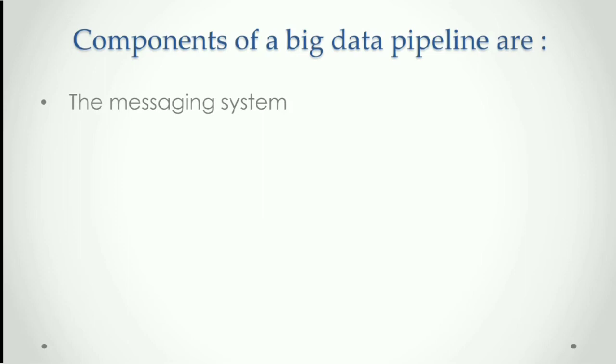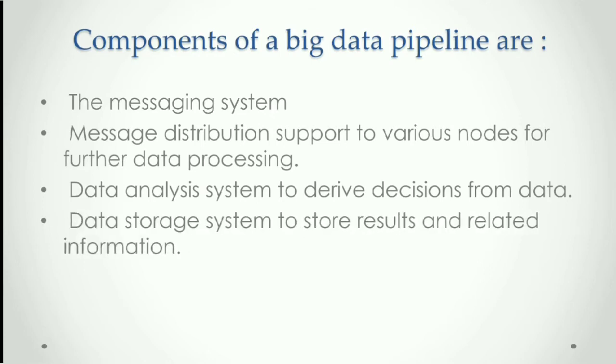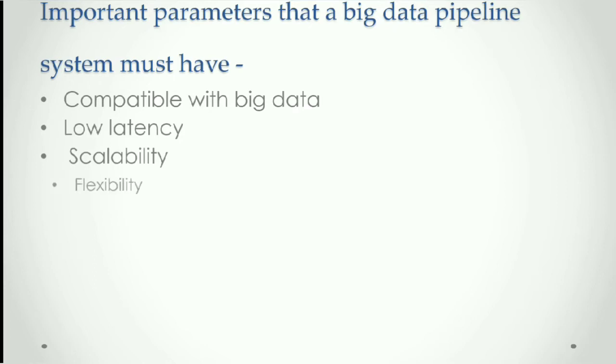Components and parameters. Components of a big data pipeline are the messaging system, message distribution to support various nodes for further data processing, data analysis system to derive decisions from data, data storage system to store results and related information, data representation and reporting tools, and alert system. Important parameters that a big data pipeline must have: compatible with big data, low latency, scalability, flexibility, and economic viability.